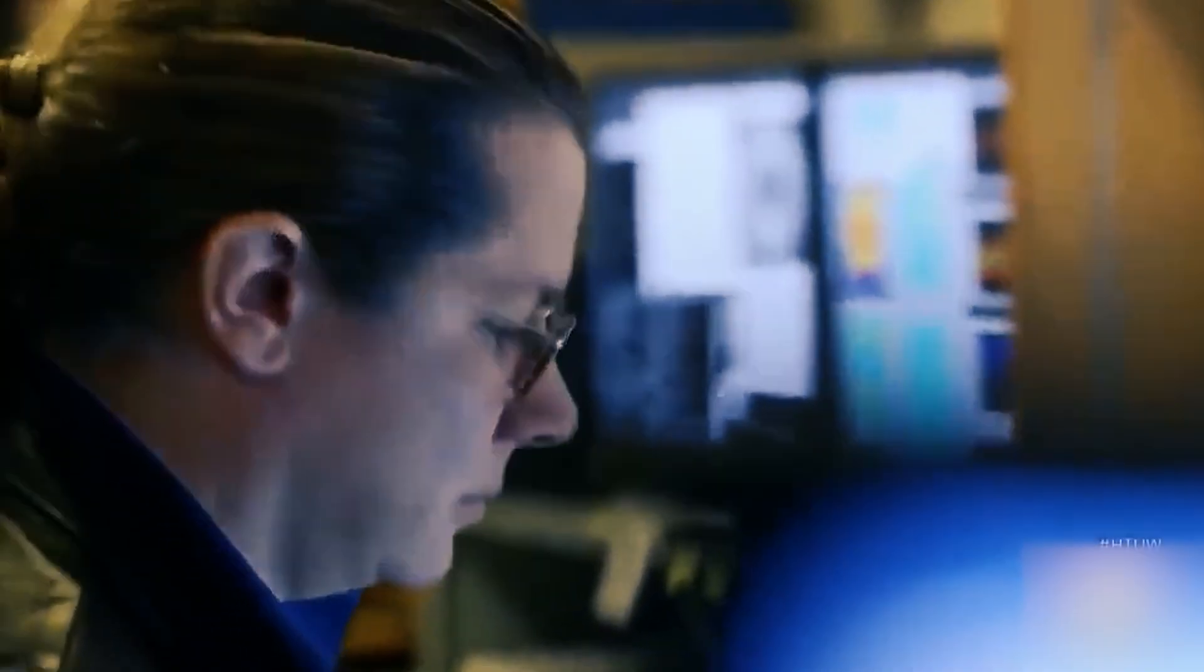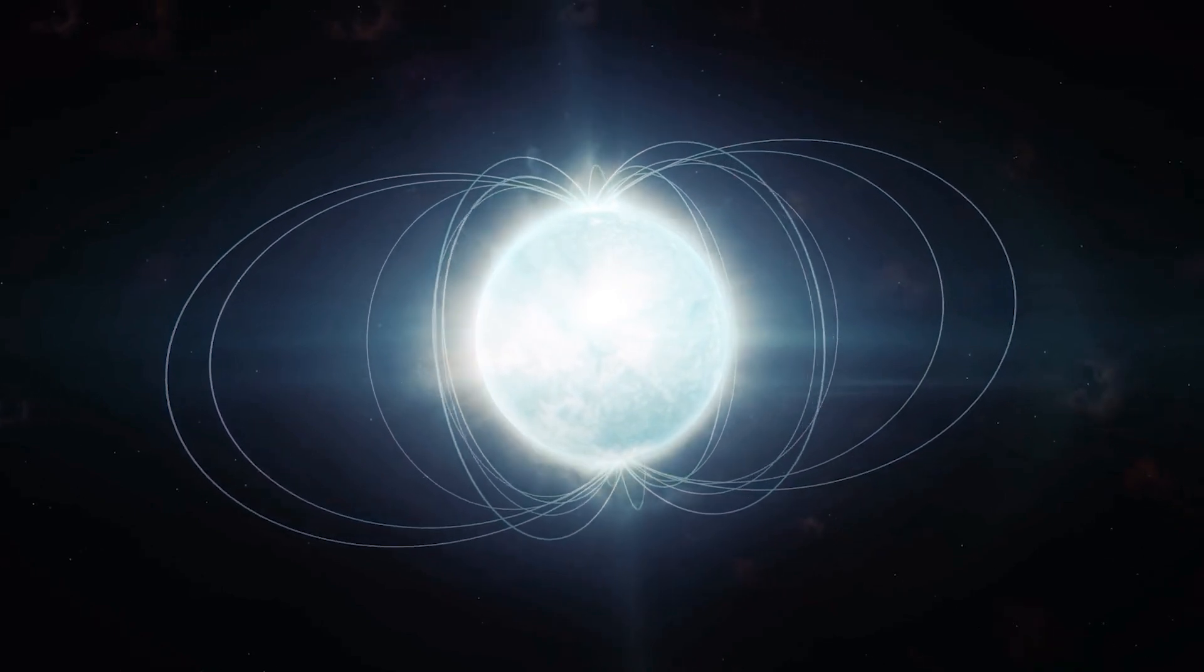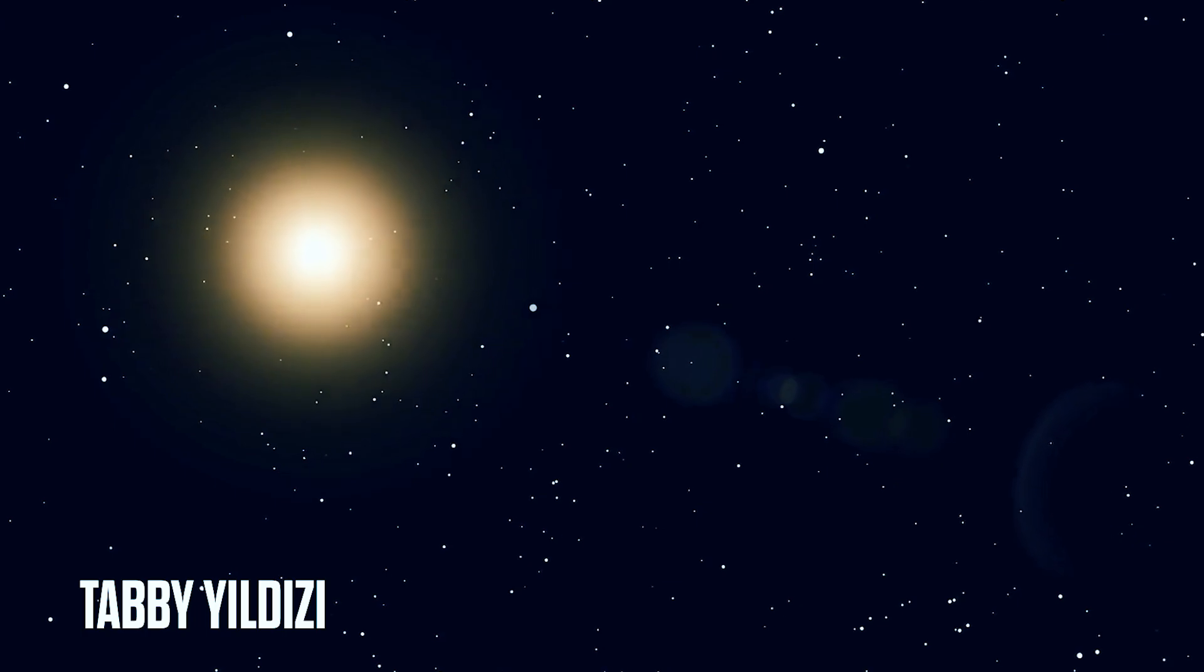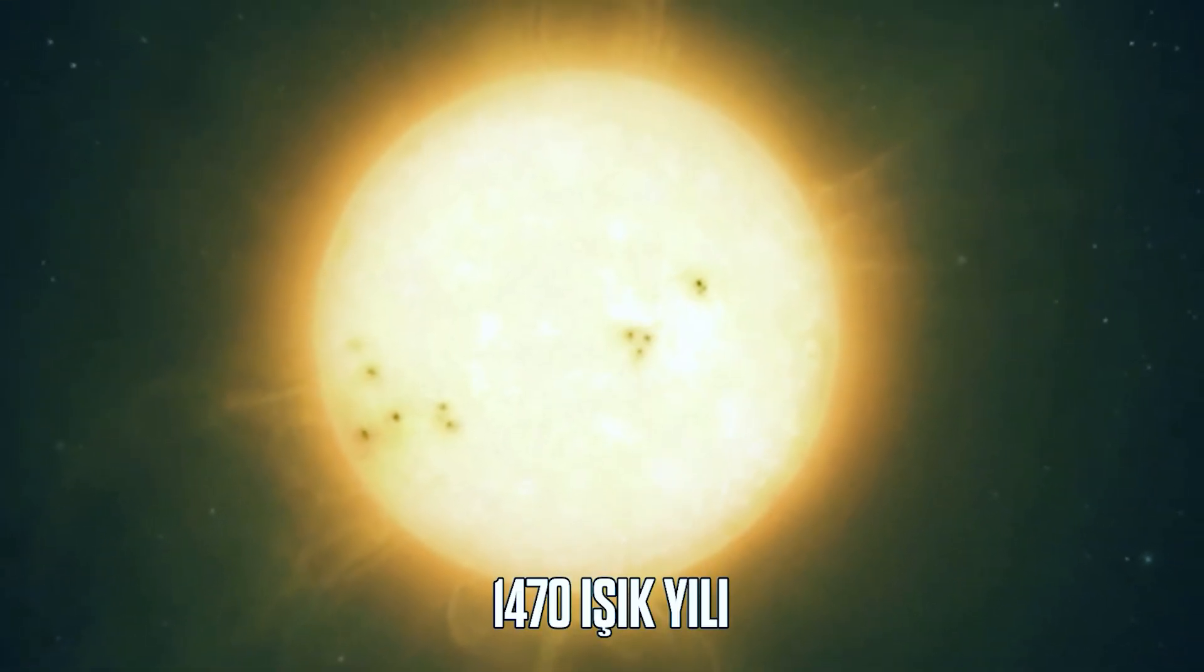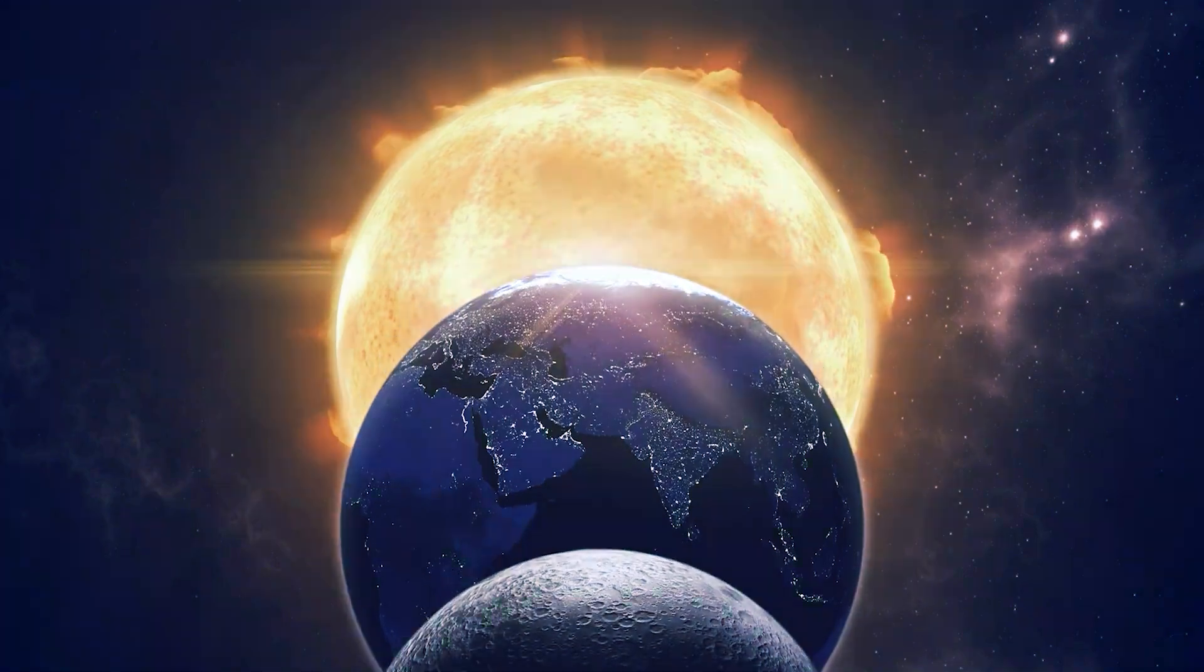The star used to be part of a binary system, orbiting a companion star. But they ventured too close to the black hole. The monstrous black hole captured the companion star with its gravity, propelling the blue star outwards at thousands of kilometers per second. Scientists speculated this event occurred roughly 5 million years ago. Yet, there are other stars that defy logic with their inconsistent behavior.